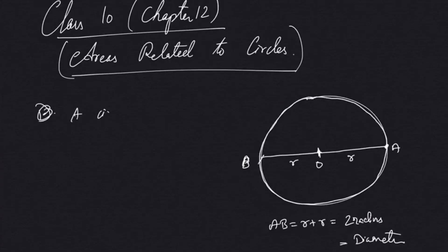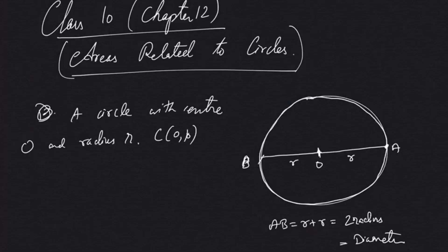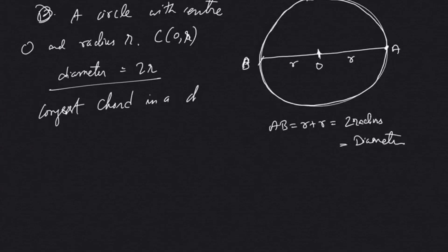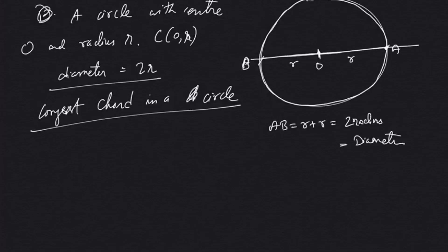So AB becomes r plus r, which is two times the radius, also called the diameter. If we have a circle with center O and radius r, then diameter is two times r. The diameter is also the longest chord in a circle. A chord is a line that passes through the circle touching at two ends, and the diameter is the longest such chord.